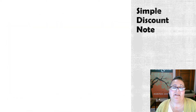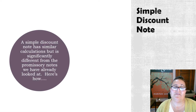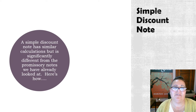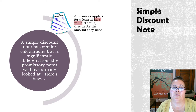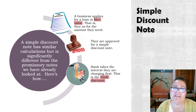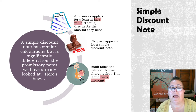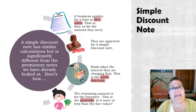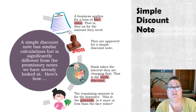We want to talk today about a specific type of promissory note known as a simple discount note. A simple discount note has very similar calculations to the simple interest loans we've done before, but it is significantly different. When a business applies for a loan at face value — the amount of money they need — and is approved for a simple discounted note, the bank takes the interest they're charging first. They take the interest off the top of the loan; this is known as the bank discount. The remaining amount given to the borrower is known as the proceeds.